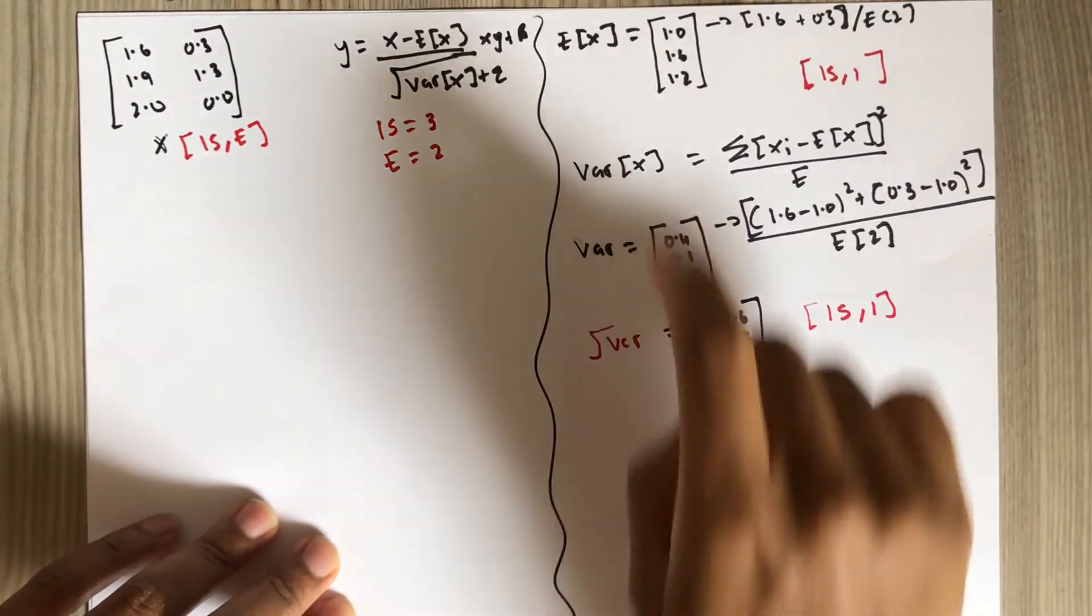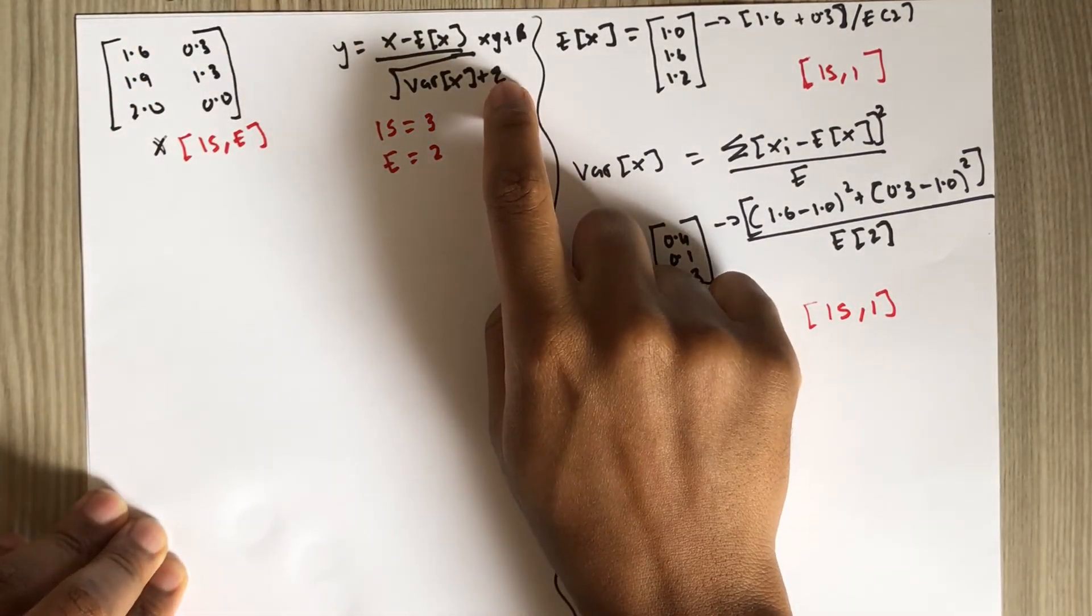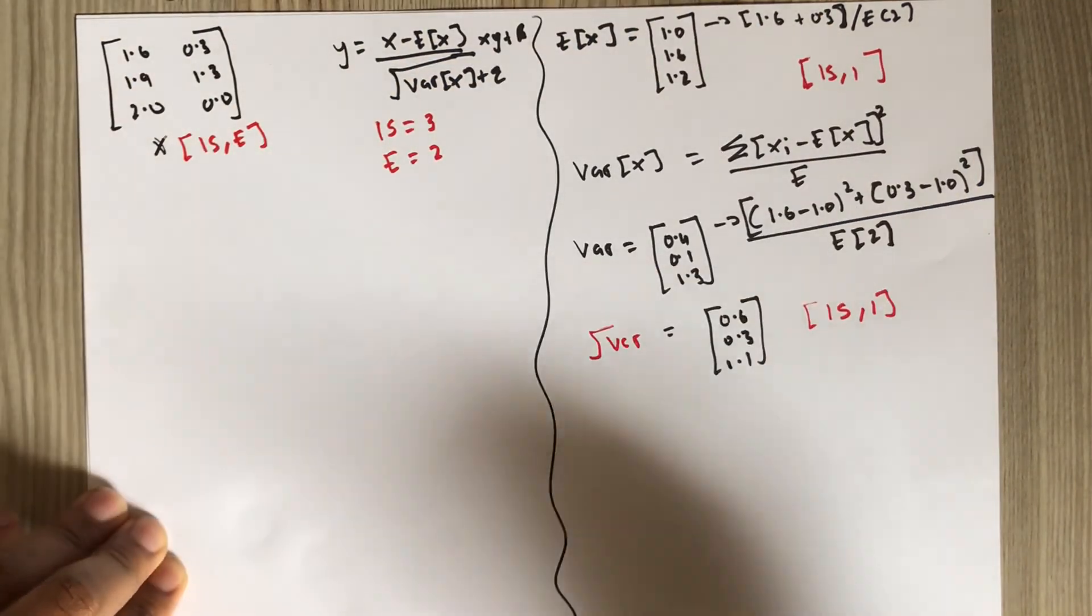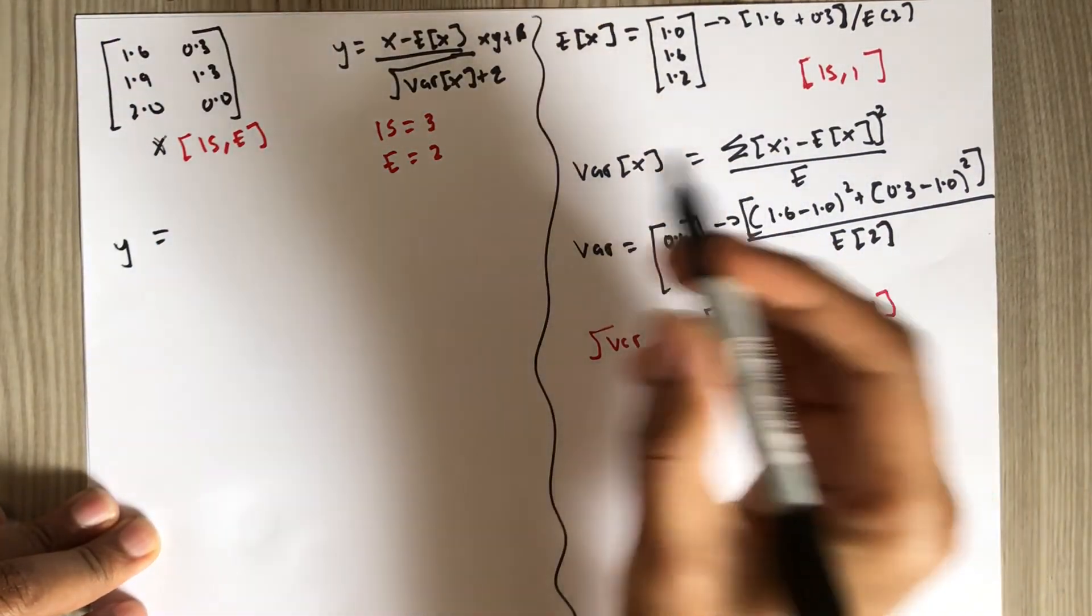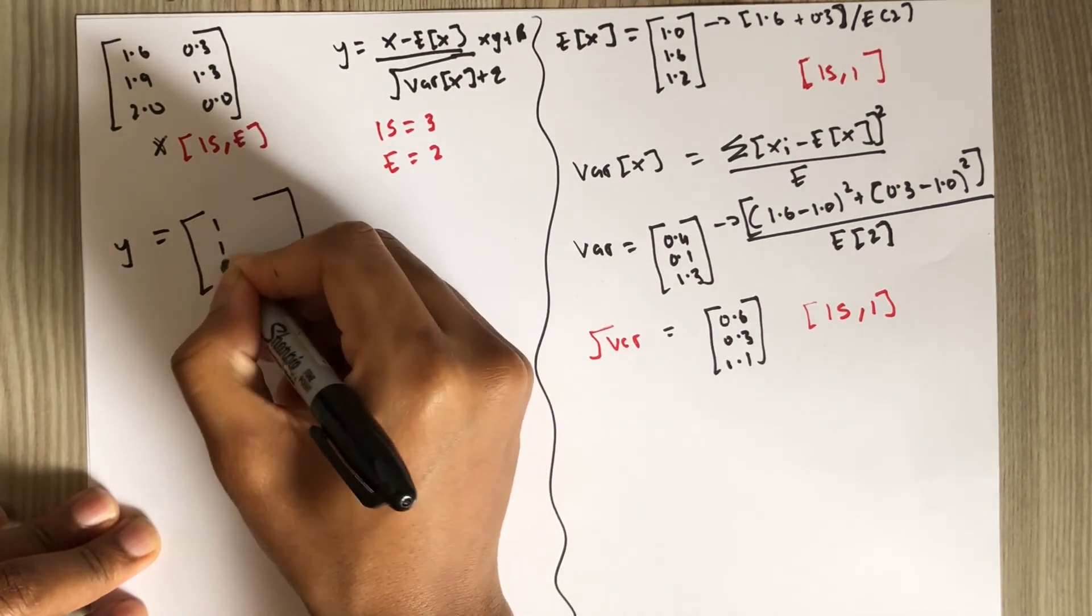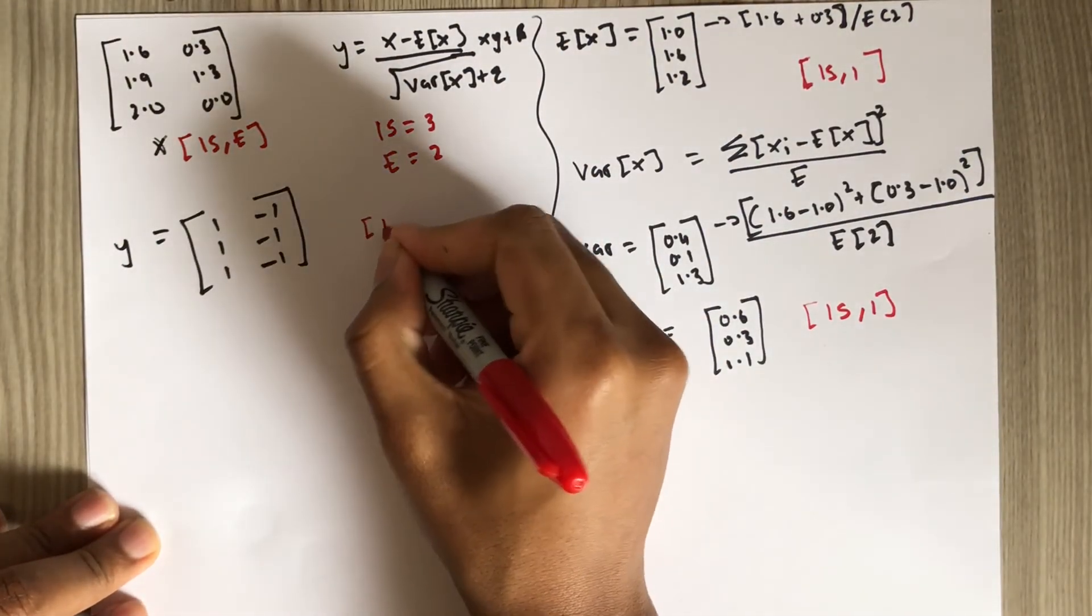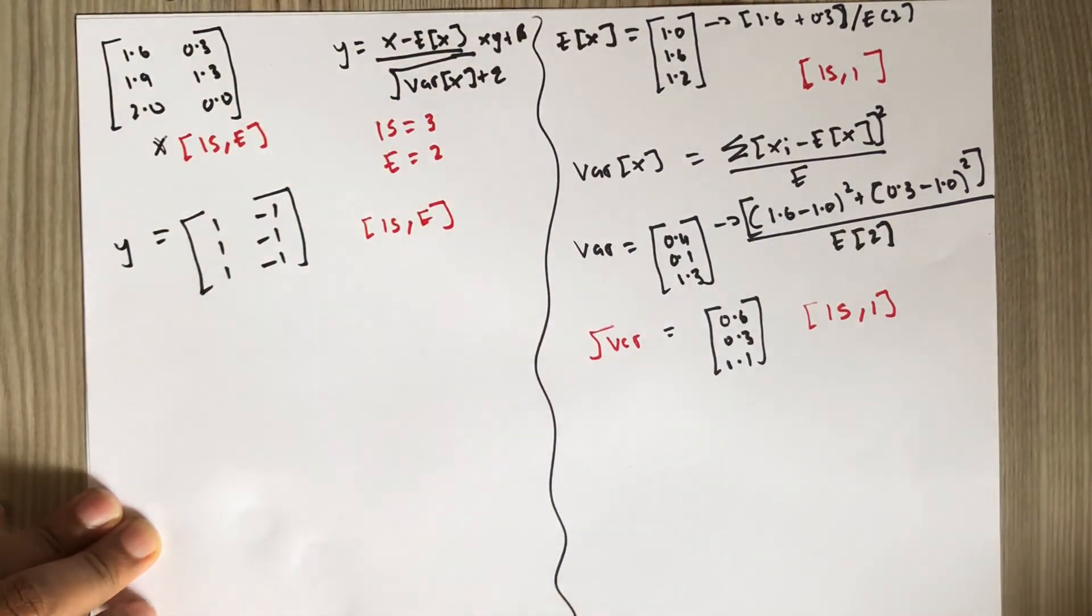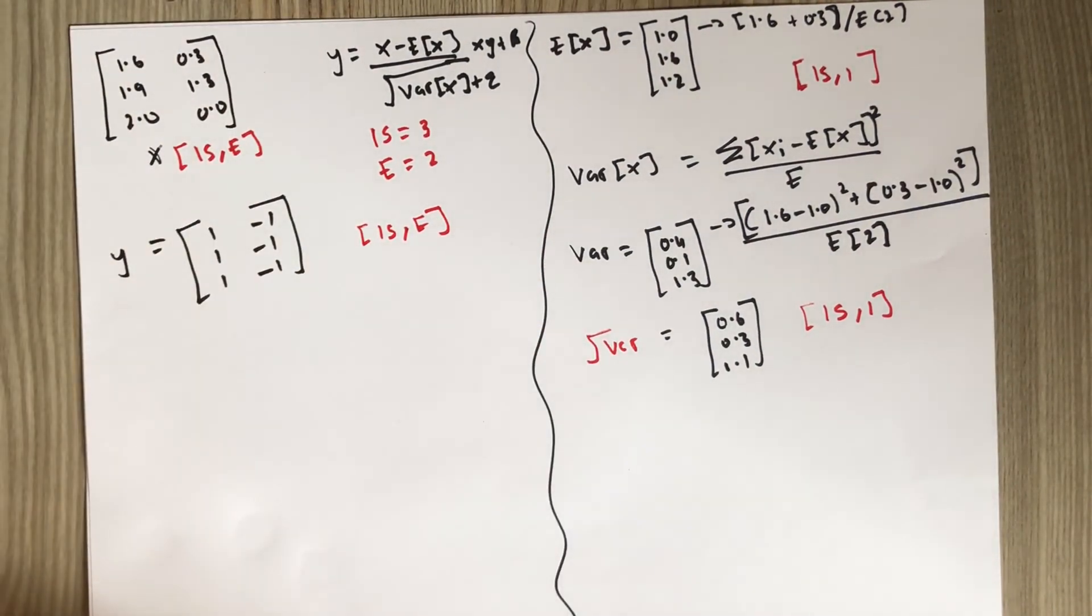So we have the expected value, we have the variance, we just need to plug that into the formula. This epsilon, it is 0 for simplicity in this example, and we can forget about these other parameters. When you put the variance and the expected value in the formula, you will end up with this result, which also has a dimension of is by e. And this is the output of the normalization, or layer normalization, which is different from batch normalization. Thank you.